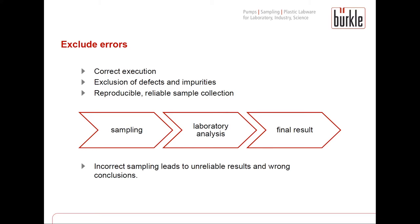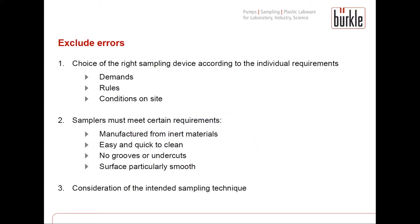Sampling must be reproducible to ensure comparability and needs to be taken regularly to ensure high quality. To exclude errors, the sampling device has to be chosen according to individual requirements like demands, rules and conditions on site. The sampler must be appropriate for the individual application. Sampling equipment must be made of inert materials that do not react with the medium, so the sample is not contaminated. Samplers should also be quick and easy to clean, without grooves or undercuts where residues can accumulate, and should have particularly smooth surfaces.